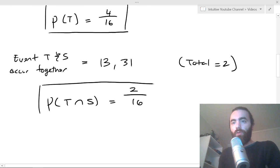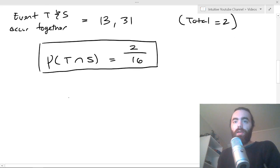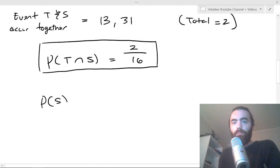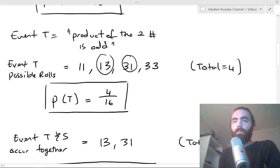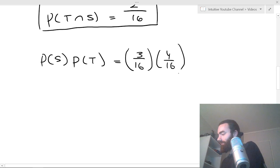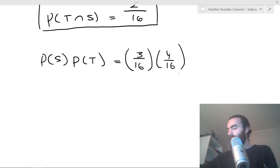So now we have all of those things. We can determine whether the events are independent or not. So let's find the probability of S times the probability of T. What does that equal? That's going to be 3 over 16 times our 4 over 16. And you just put that in your calculator. You get 3 over 64.